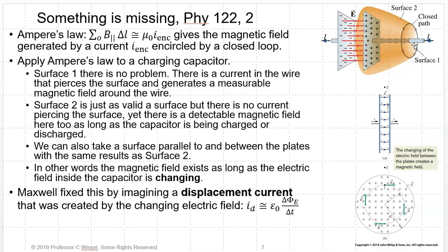You can detect the magnetic field by putting a magnetometer near there, or a compass needle will point in the direction of the magnetic field, or sprinkle iron filings around it. Surface two is just as valid, but there's no current that goes through the surface itself — the current has to go through the surface for this to work. Yet we can find a magnetic field here; we can detect a magnetic field around the capacitor, but only while the capacitor is charging or discharging. We also have a surface inside between the parallel plates — again we have a magnetic field, but there's no current. A magnetic field exists as long as the electric field inside the capacitor is changing, but there's no time-changing term in Ampere's law to account for that.